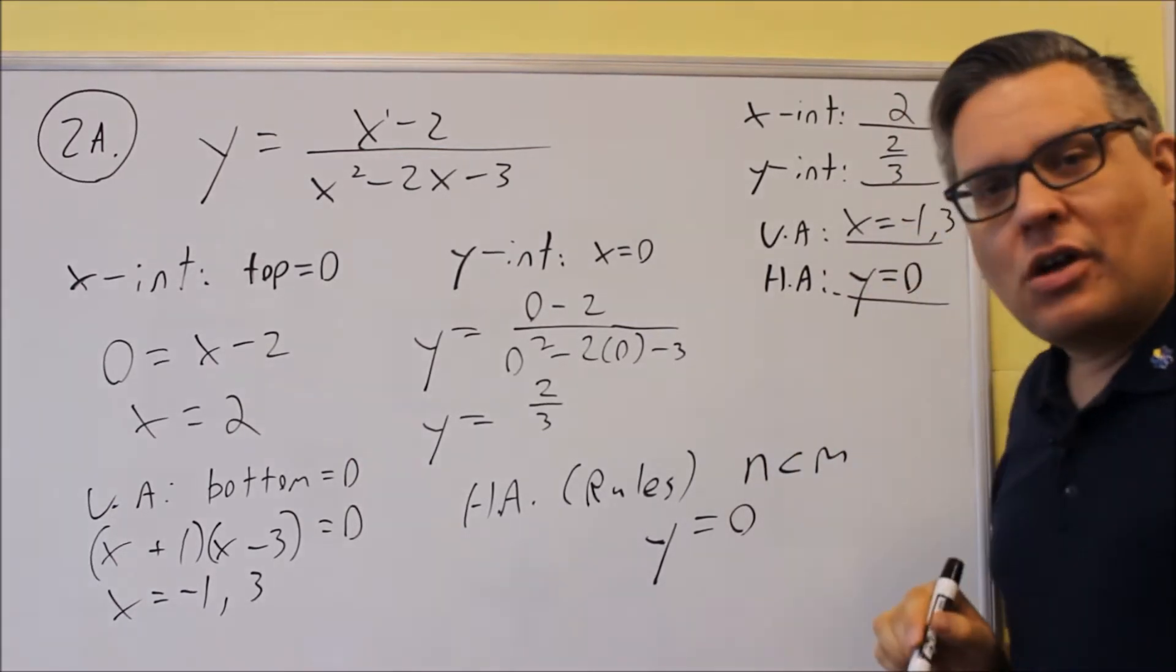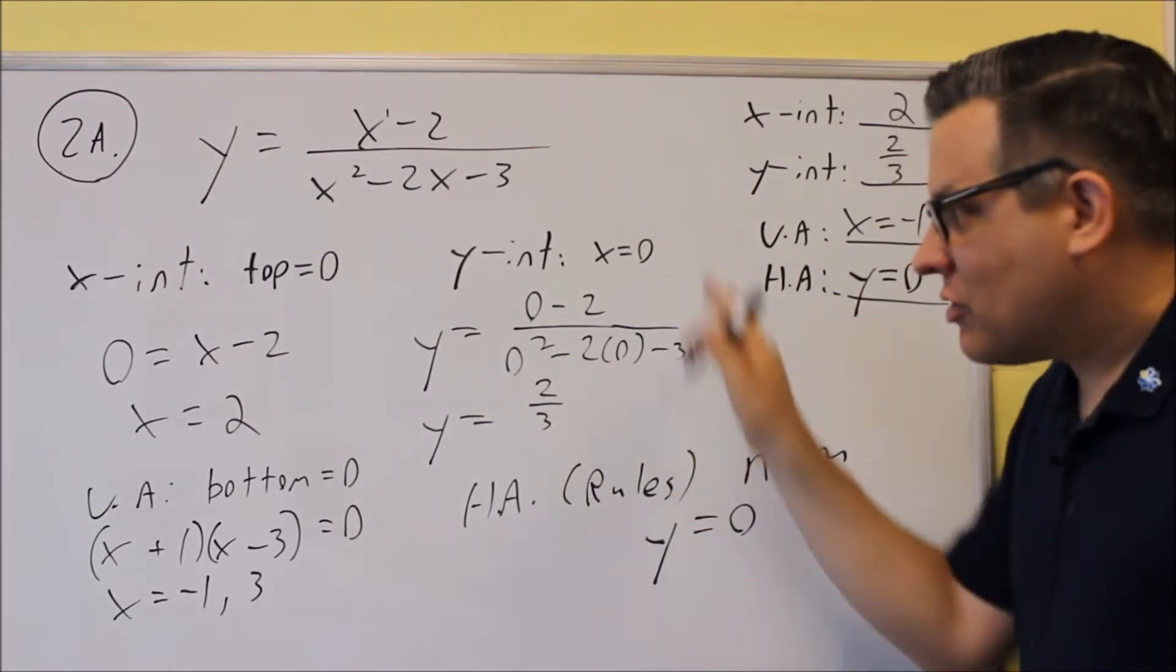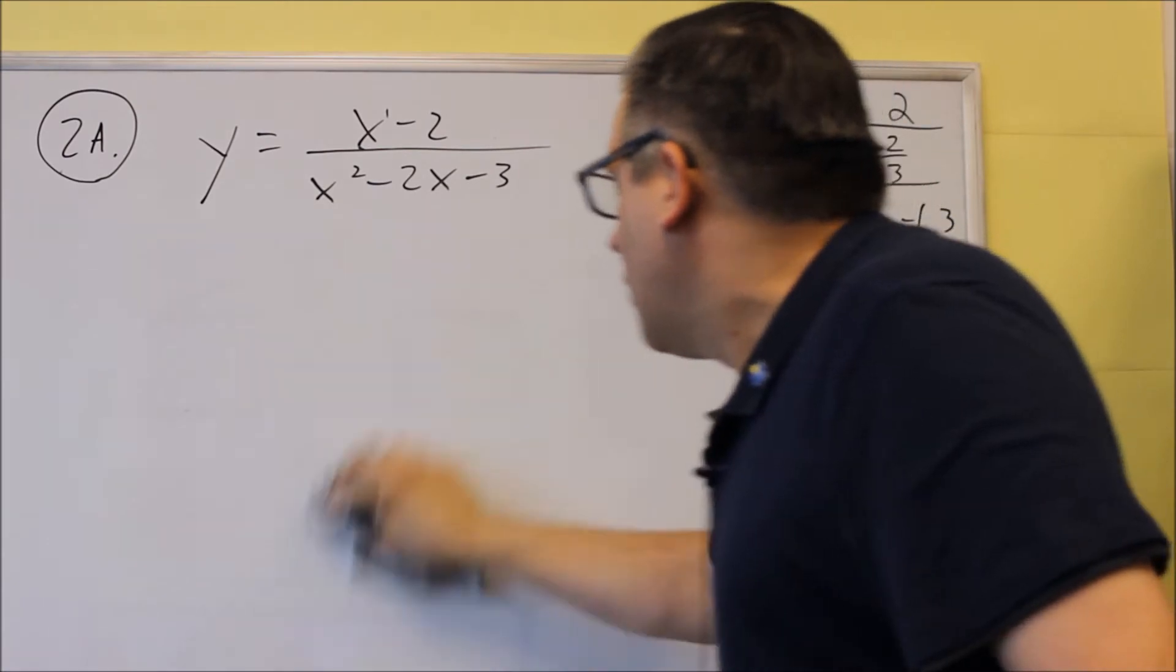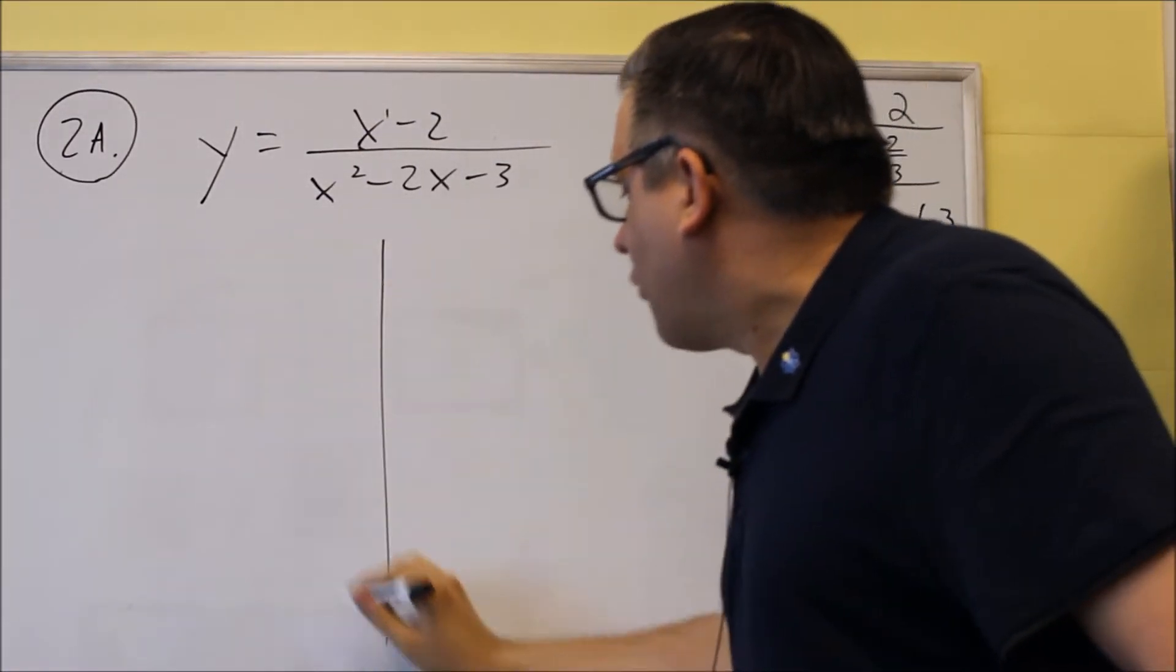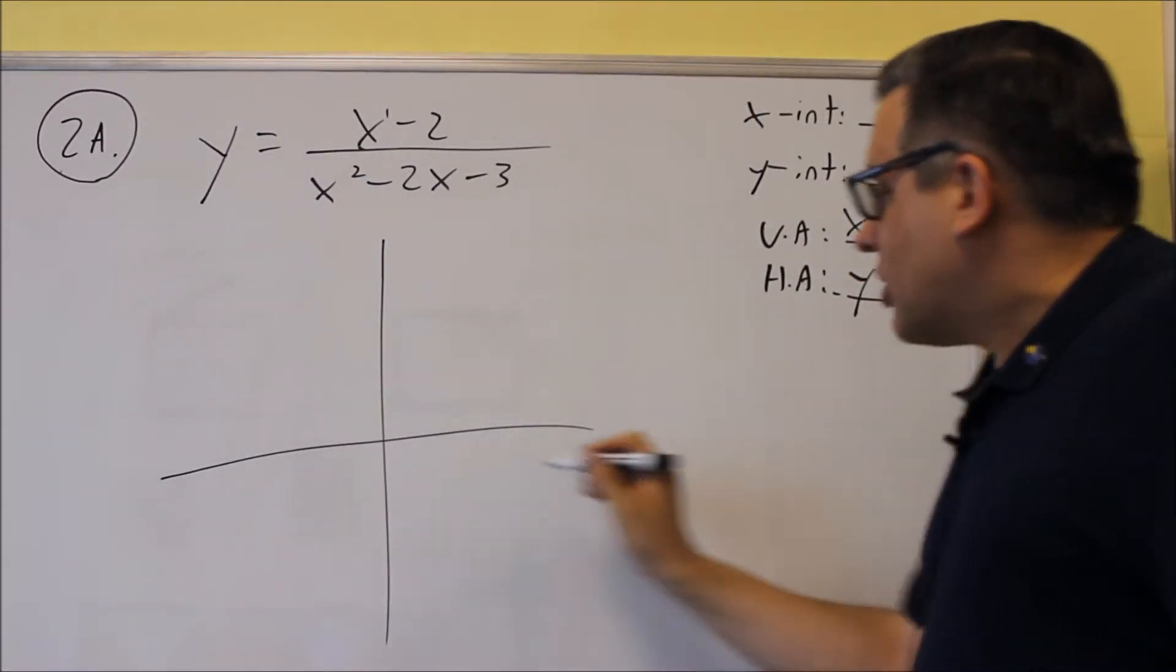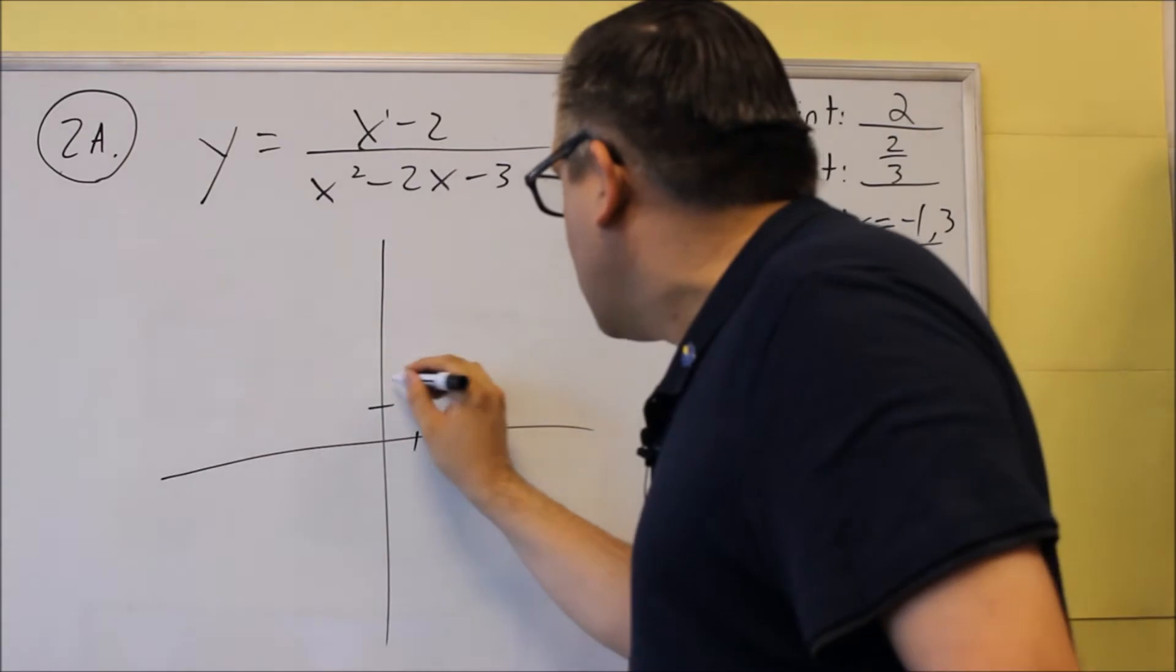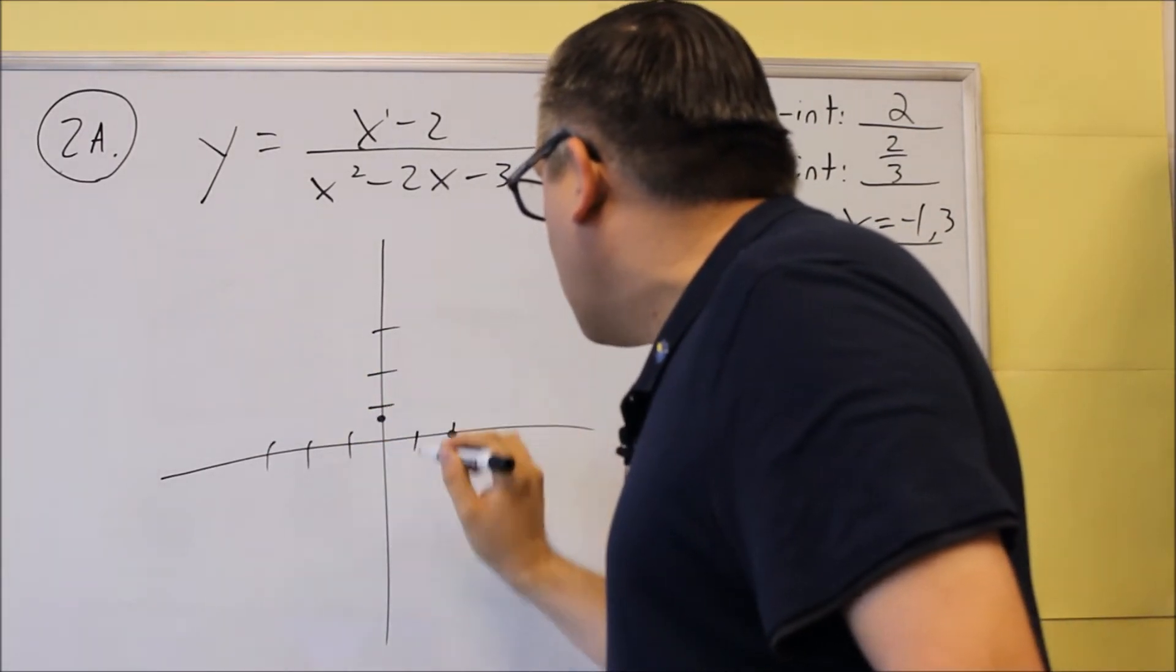So now we have all the preliminary information, we're ready to graph it. We're going to erase this here so we have some space and then we're going to do the graph. So this information, we're going to put on the graph first. I've got my intercepts. X-intercept is two, so it crosses at two comma zero. The y-intercept is two-thirds, so if I put that there, it's going to be about right here.